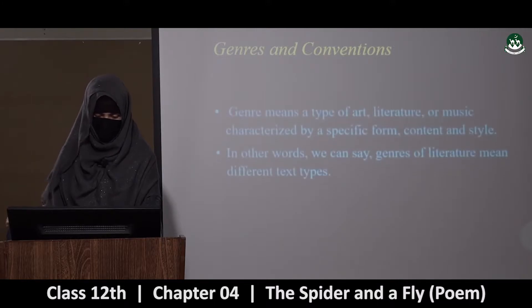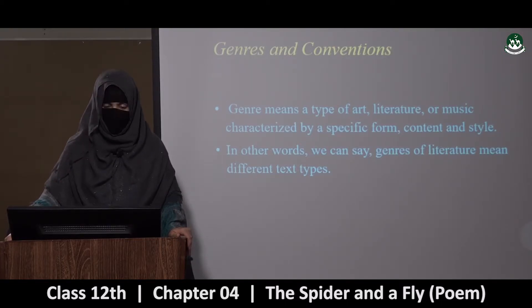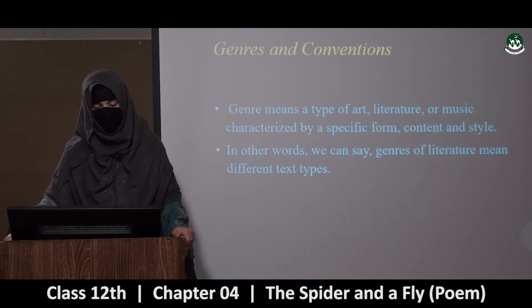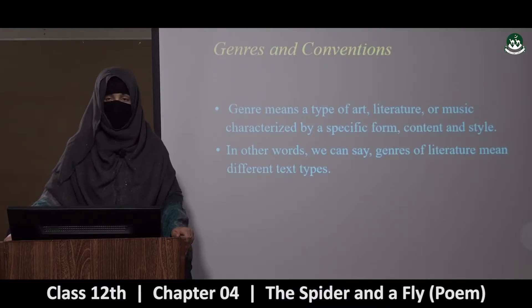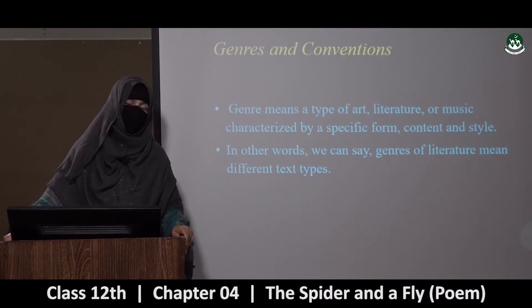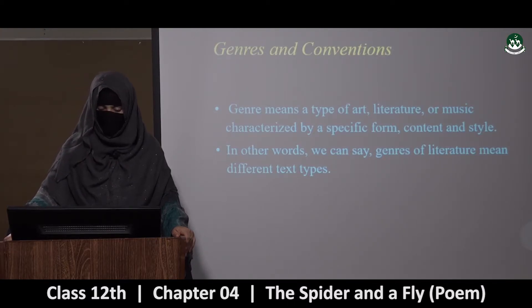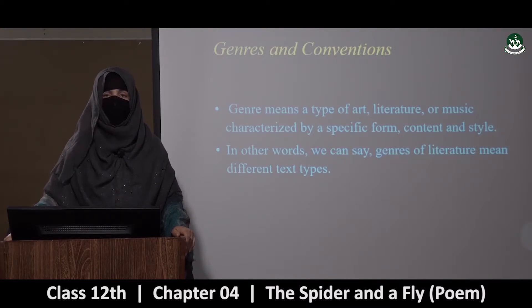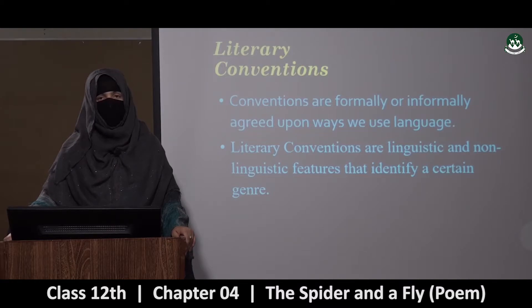Genre means a type of art, literature or music characterized by specific form, content and style. A specific form is different. In other words, we can say genres of literature mean different text types — literature mein joh different genres hote hai, woh different text types ko hum kahte hai.